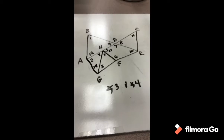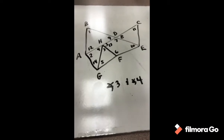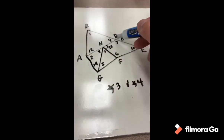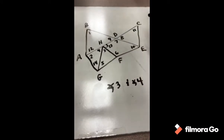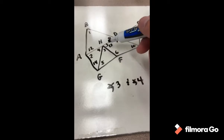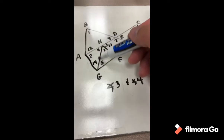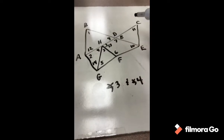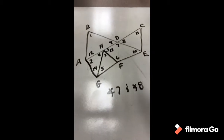In this picture, identify the relationship between angle 3 and angle 4. We see that this is a straight line and this angle is a right angle, so angle 3 and angle 4 would be considered complementary because they add up to a right angle, or 90 degrees. They would also be adjacent — angles that share a common ray and are next to each other are called adjacent angles. So: complementary and adjacent.